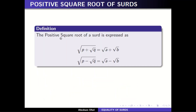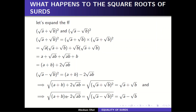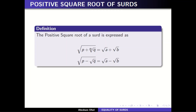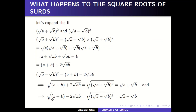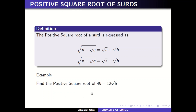So the positive square root of a surd is expressed as follows: the square root of p plus square root of q is of the format a plus square root of b, where p equals a plus b and q equals a times b — here we assume the coefficient in front is one. If it is minus instead, then the square root of p minus square root of q is of the form square root of a minus square root of b.